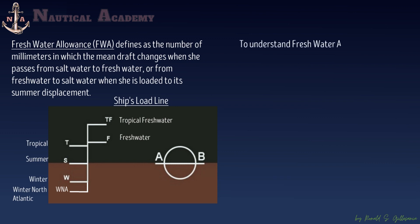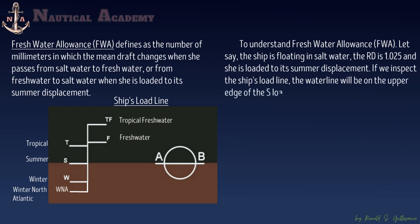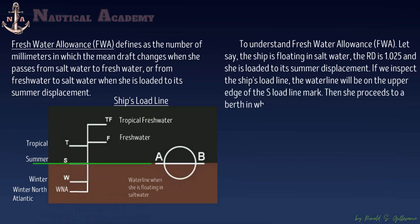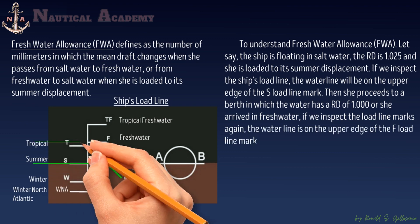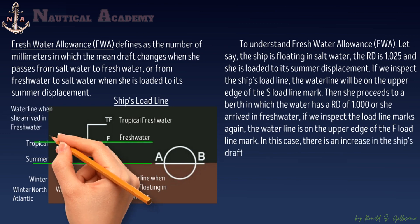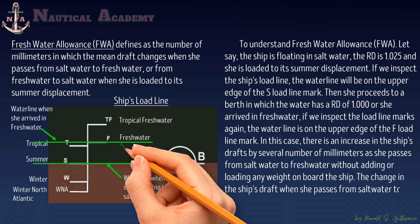To understand freshwater allowance: say the ship is floating in saltwater with a relative density of 1.025 and is loaded to her summer displacement. The waterline will be on the upper edge of the S load line mark. When she proceeds to a berth where the water has a relative density of 1.0, or freshwater, the waterline moves to the upper edge of the F load line mark. There is an increase in the ship's drafts by several millimeters as she passes from saltwater to freshwater without adding any weight. This change in draft is called freshwater allowance.